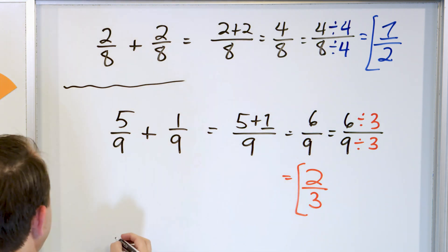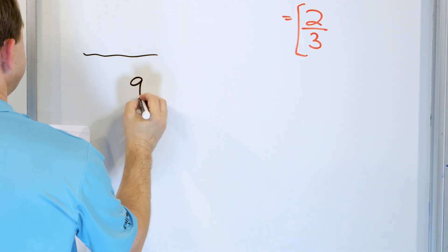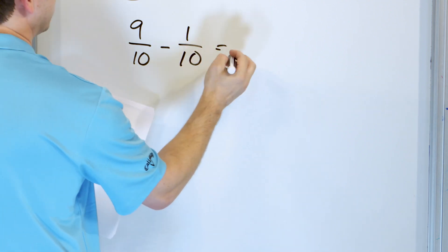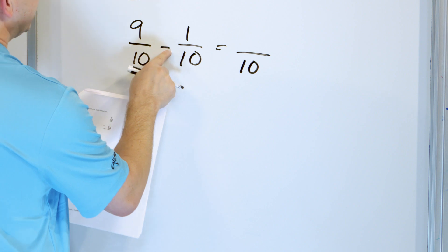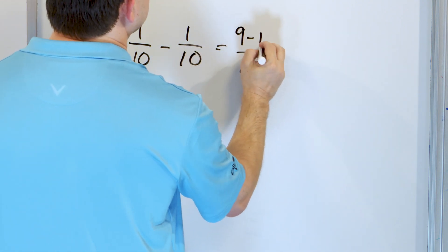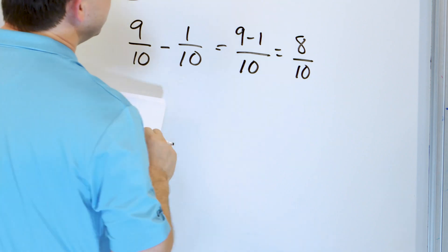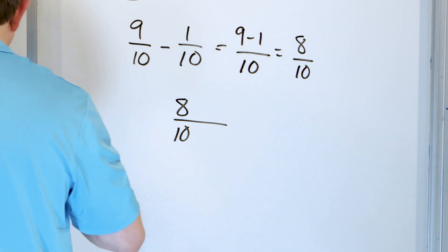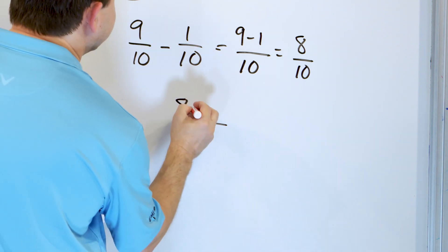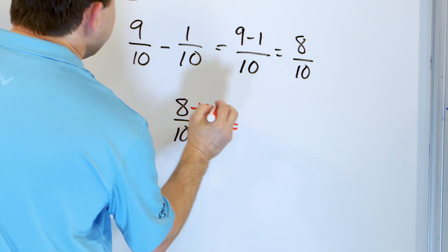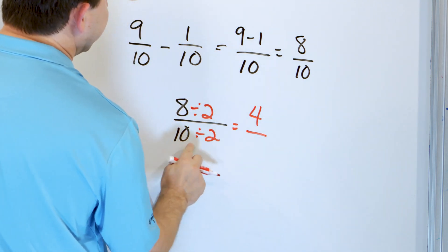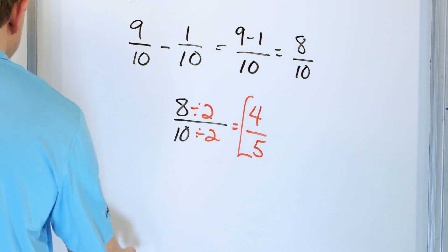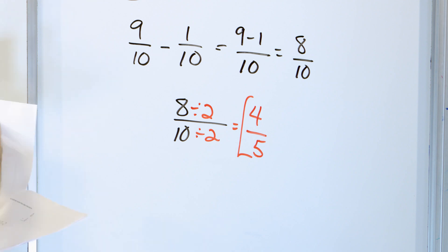Let's take a look at nine-tenths subtract away one-tenth. Denominators are already the same — ten goes in your final answer. Nine minus one in the numerator gives an answer of eight-tenths. Can I simplify that eight-tenths? Yes, I can divide top and bottom by two — they're both even numbers. Eight divided by two is four, and ten divided by two is five. So the answer is four-fifths, and that is the final answer.